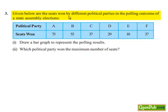Given below are the seats won by different political parties in the polling outcome of a state assembly elections. Here they were given political parties and seats won.